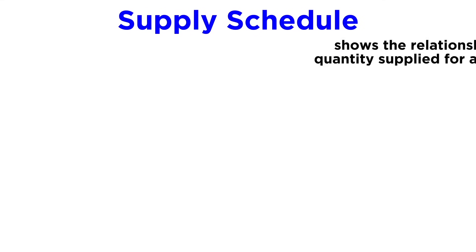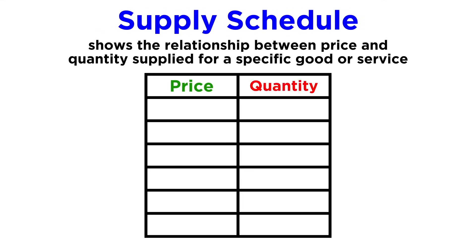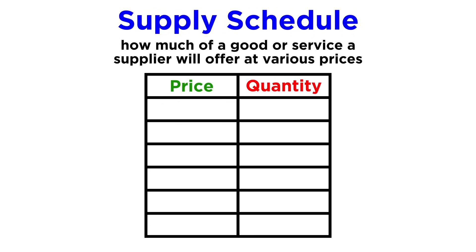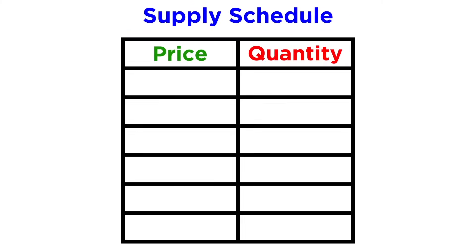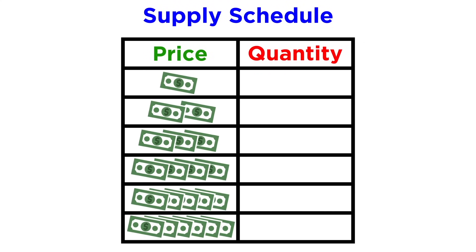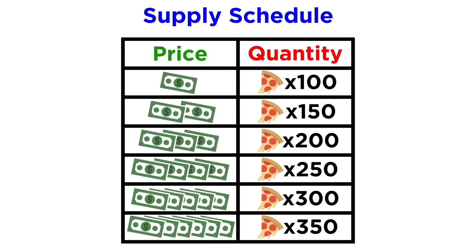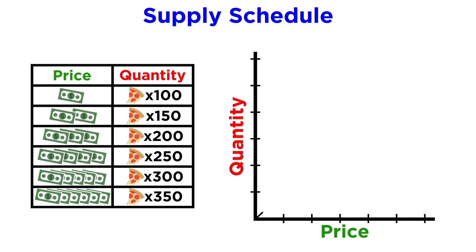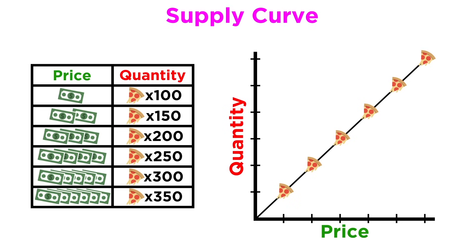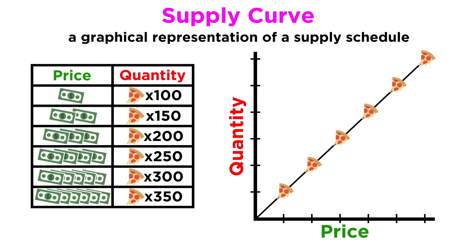Similar to a demand schedule, a supply schedule shows the relationship between price and quantity supplied for a specific good or service — how much a supplier will offer at various prices. For example, listing the price of pizza from one dollar to six dollars in the first column, and slices supplied per day in the second column — starting with one hundred and going up by fifty for each dollar increase in price. Plotting these numbers on a graph results in an upward sloping supply graph, commonly called a supply curve, which is a graphical representation of a supply schedule.